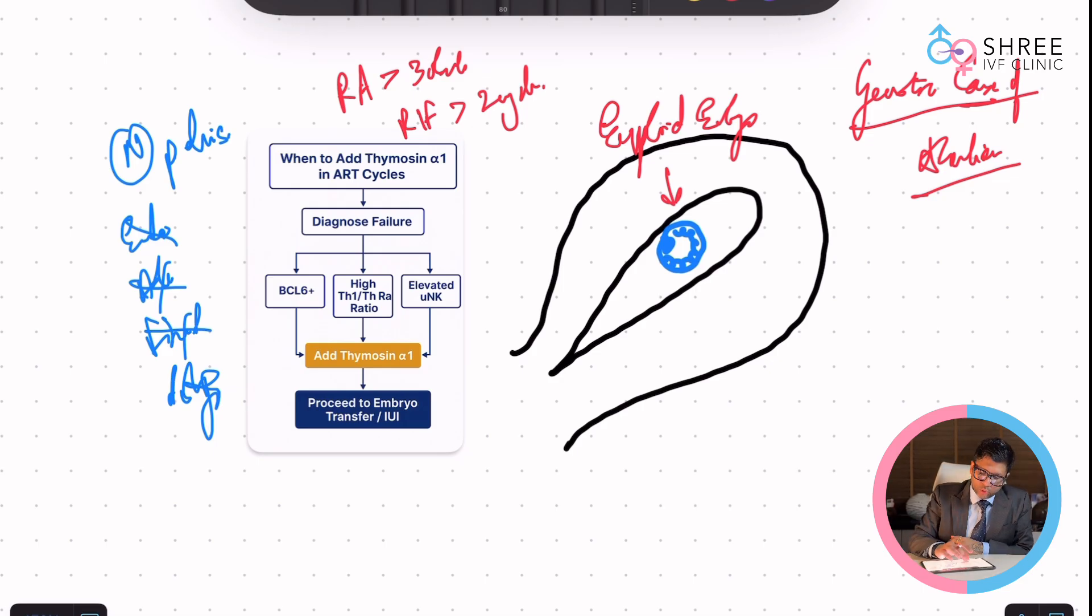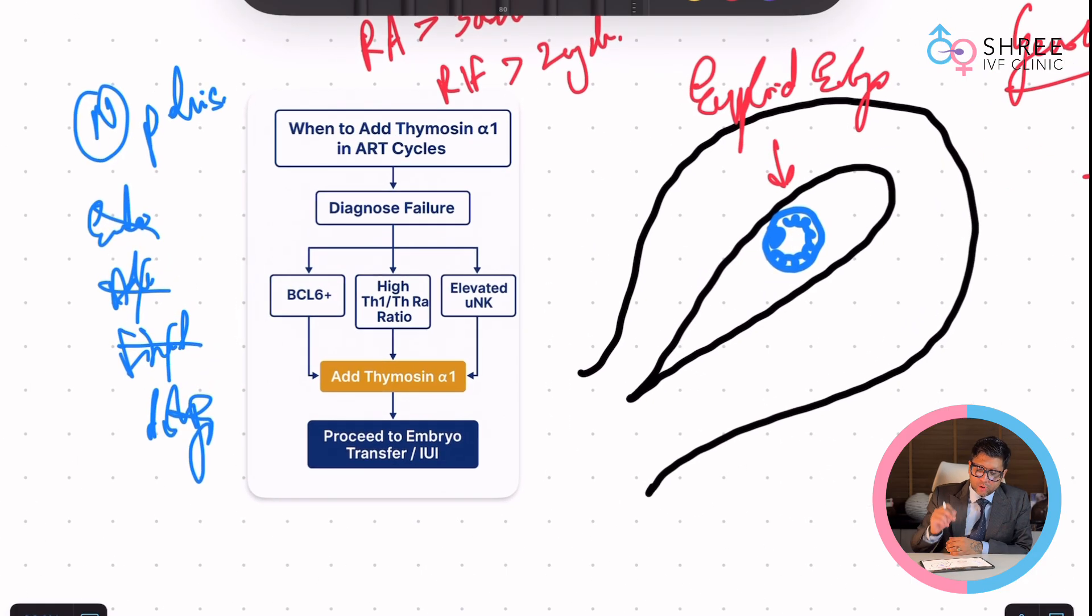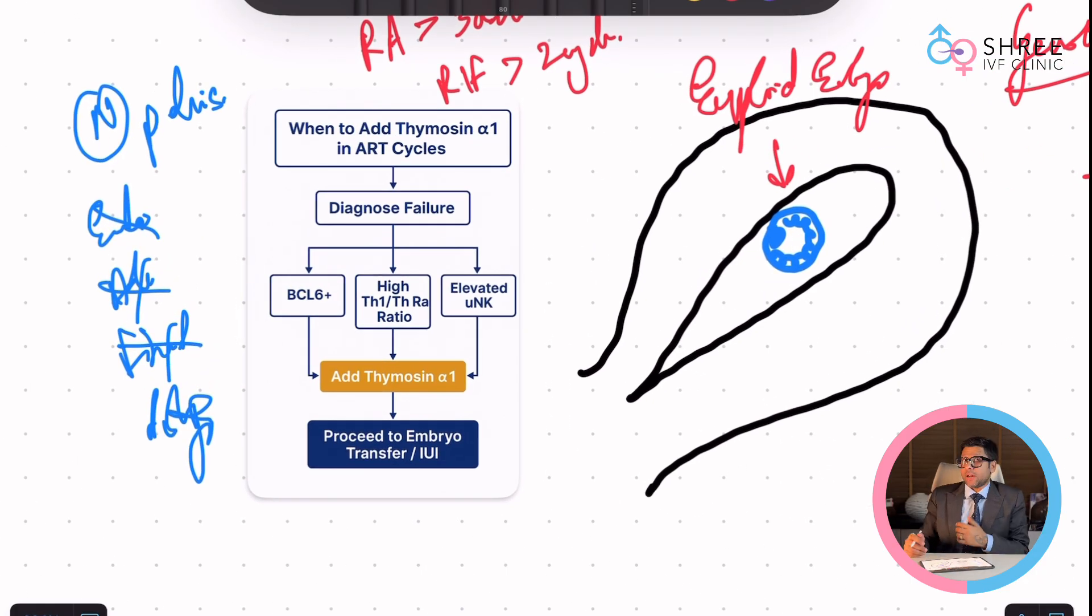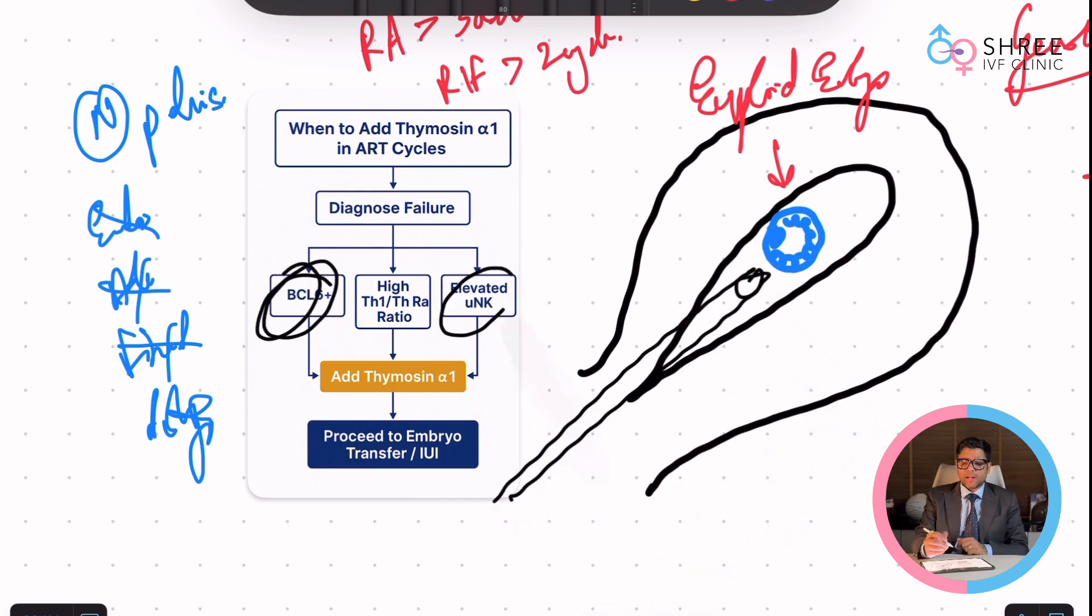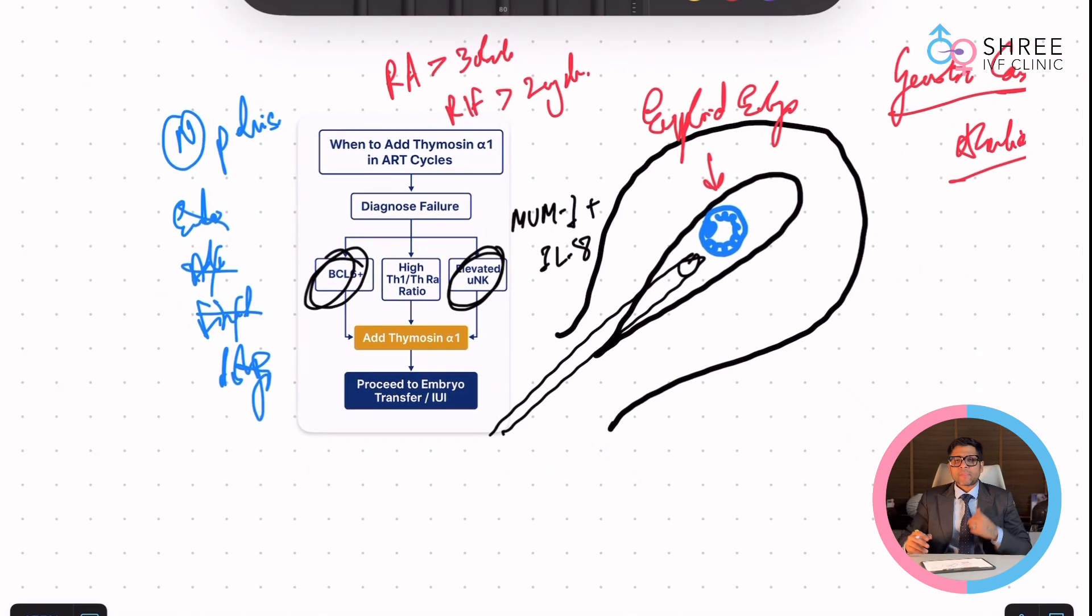Now, you can see this flowchart very beautifully. Diagnose the failure. So we have diagnosed the failure. I have spoken in my previous videos about doing a uterine biopsy. This uterine biopsy will look at BCL6, it will look at uterine natural killer cells, it will also look at MUM1 plus interleukin-8. These are the common things which it ends up looking at. After that, we come to a ratio.